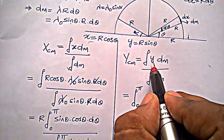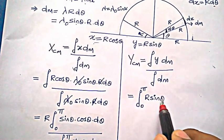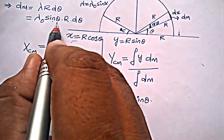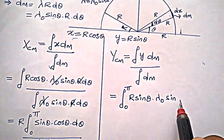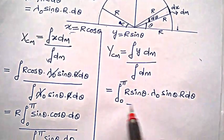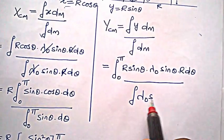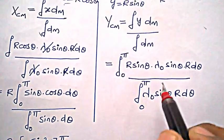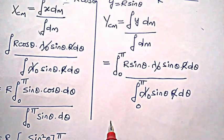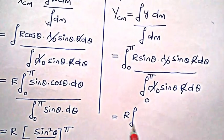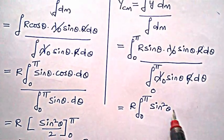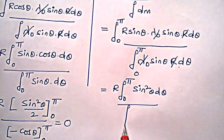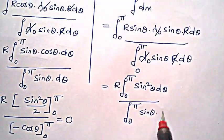Now for y_cm: y = r sinθ, so the numerator is ∫₀^π r sinθ · λ₀ sinθ · r dθ = ∫₀^π r sin²θ · λ₀ r dθ. The denominator is again ∫₀^π λ₀ sinθ · r dθ. Canceling λ₀ and r, we get r · ∫₀^π sin²θ dθ divided by ∫₀^π sinθ dθ.